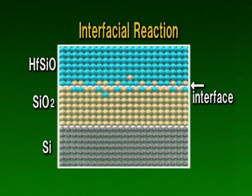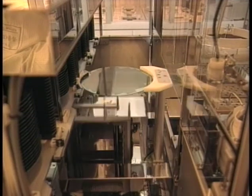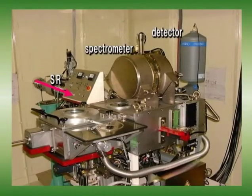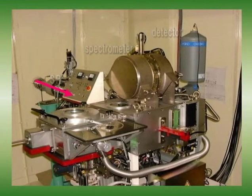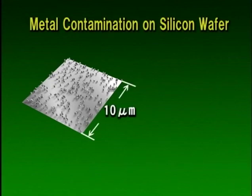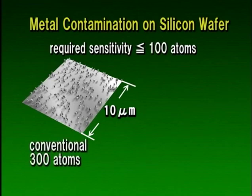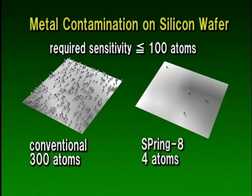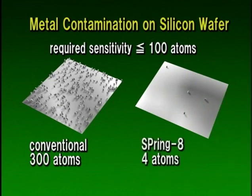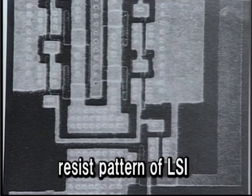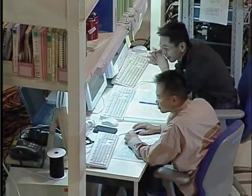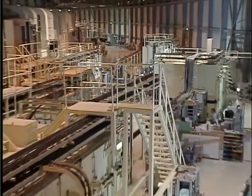For example, it was discovered that atoms are diffused at the interface between the thin LSI insulation film layers. In addition, as semiconductor devices become smaller, even minute metal contamination on the silicon wafer can cause problems. Conventional methods can only detect 300 atoms per 10 square microns, but a detection sensitivity of 100 metal atoms or less per 10 square microns is necessary. Actually, Spring-8 could detect as few as 4 metal atoms per 10 square microns. Therefore, the significance of Spring-8 should increase dramatically in the future due to the unique opportunities available there to analyze materials on the atomic and electronic levels.